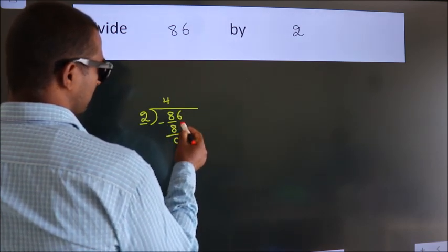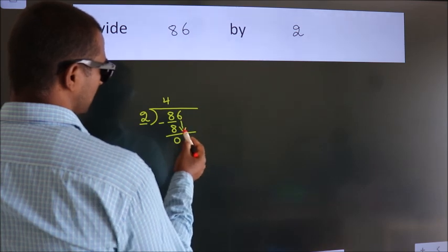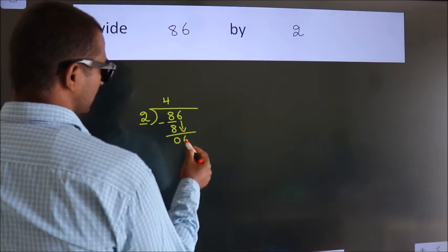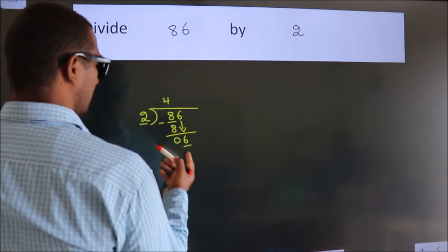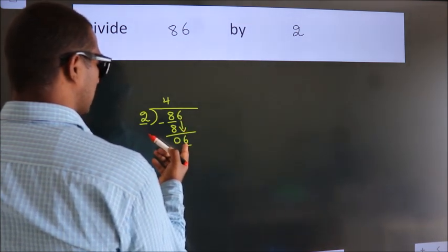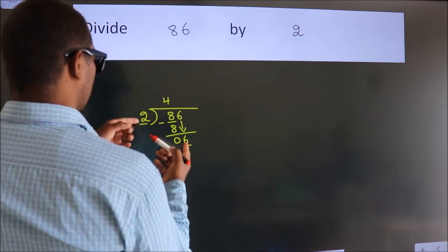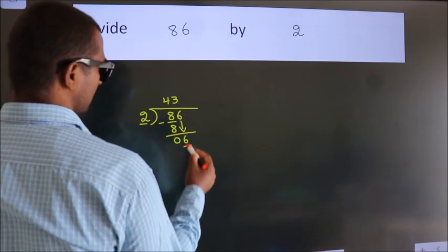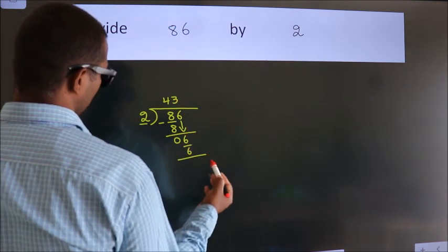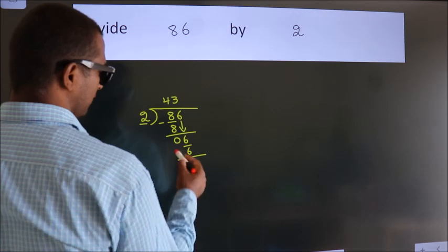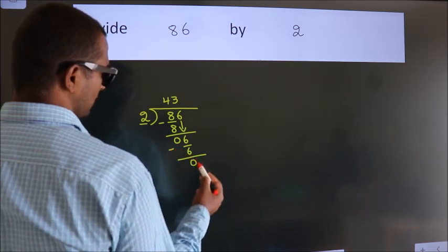After this, bring down the beside number. So 6 comes down. When do we get 6 in the 2 table? 2 threes are 6. Now we subtract. We get 0.